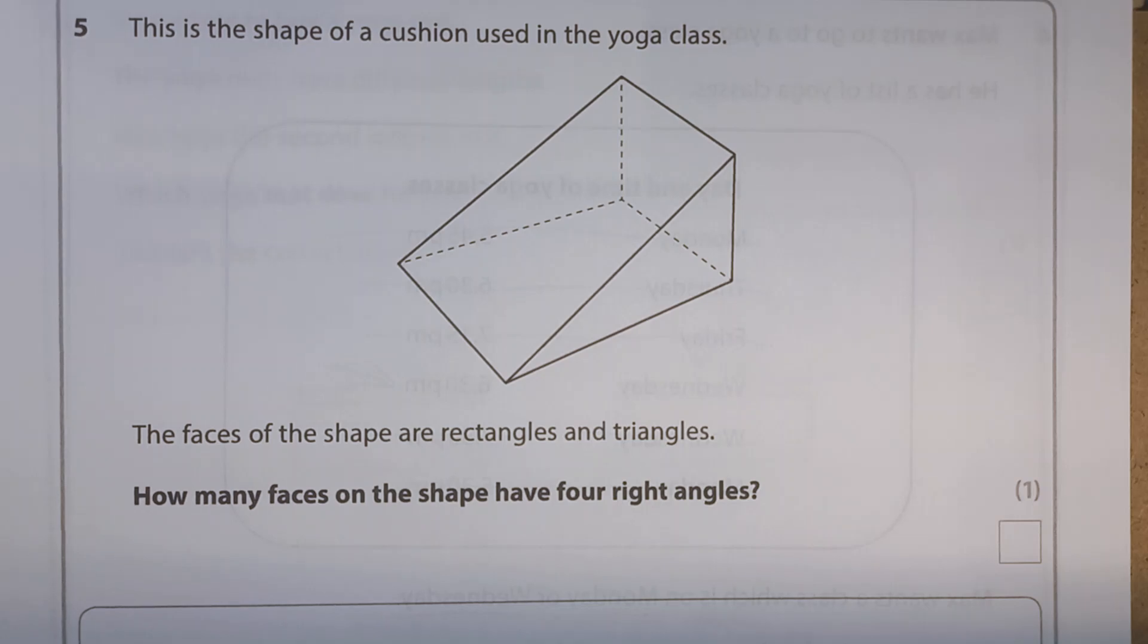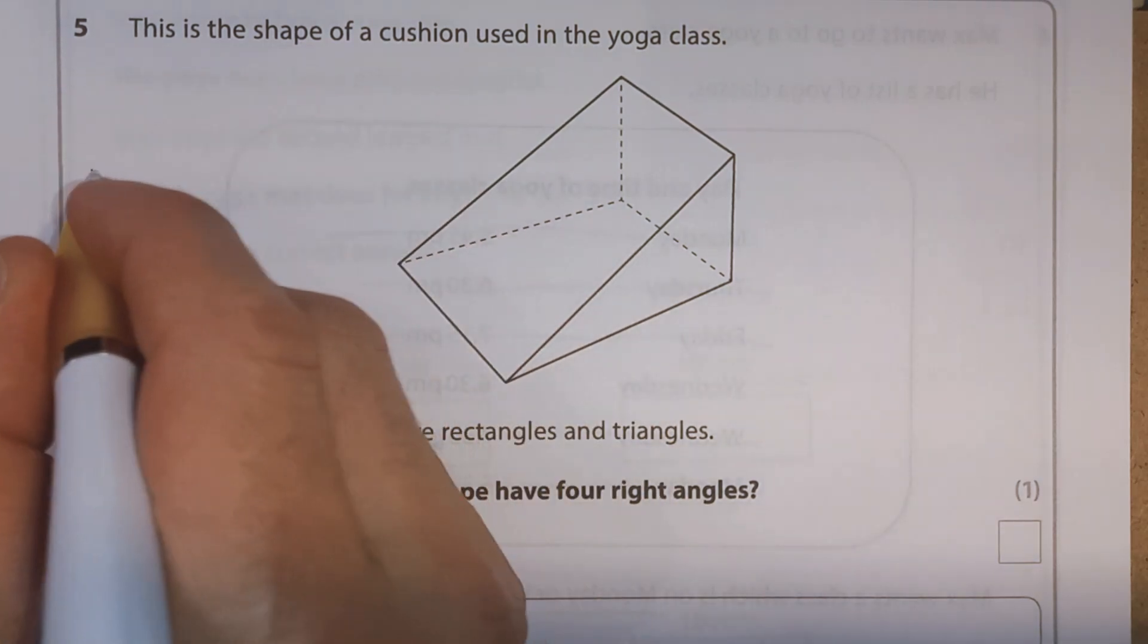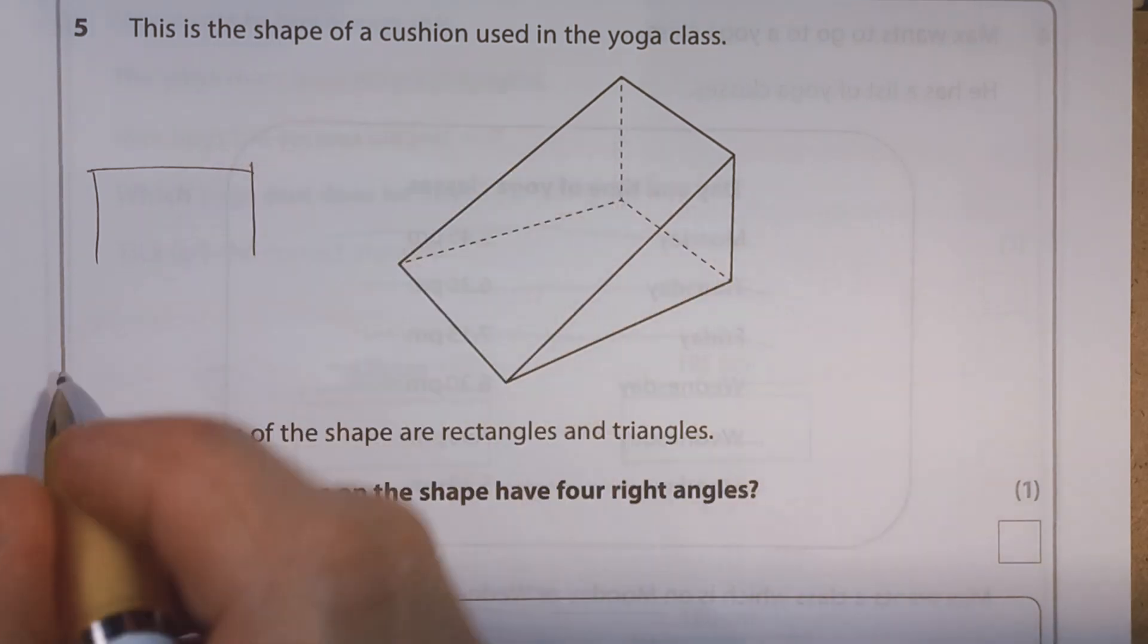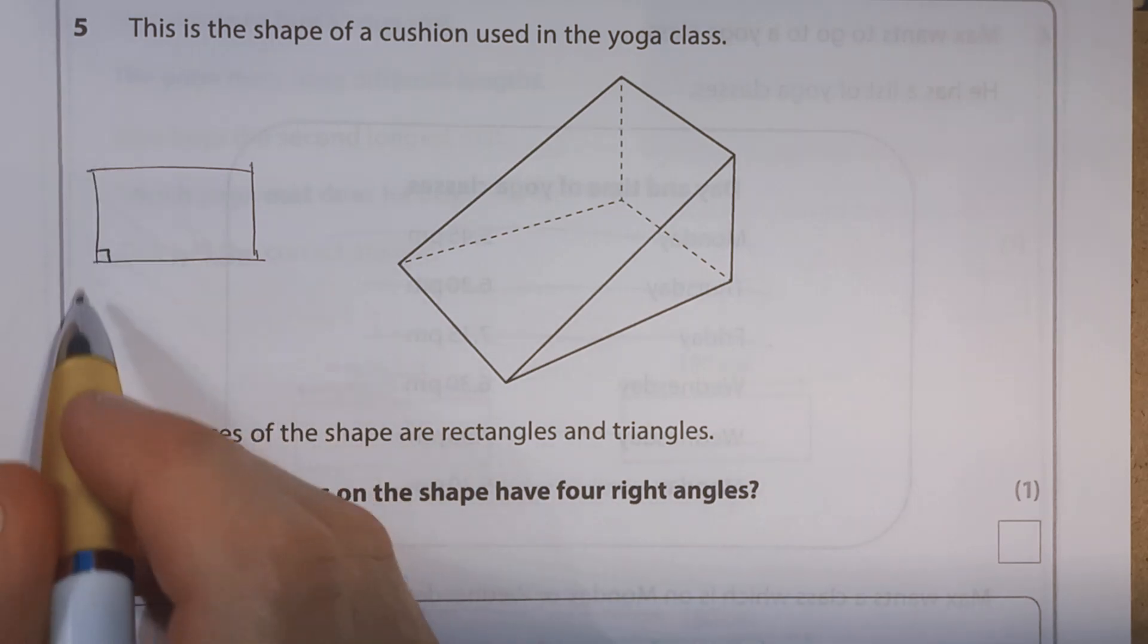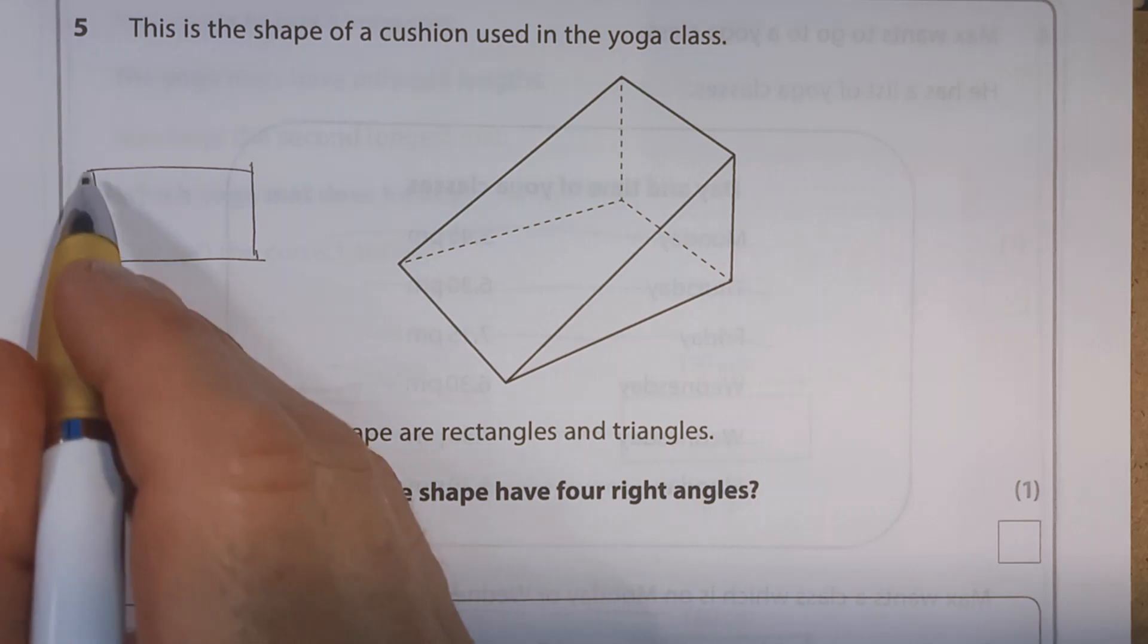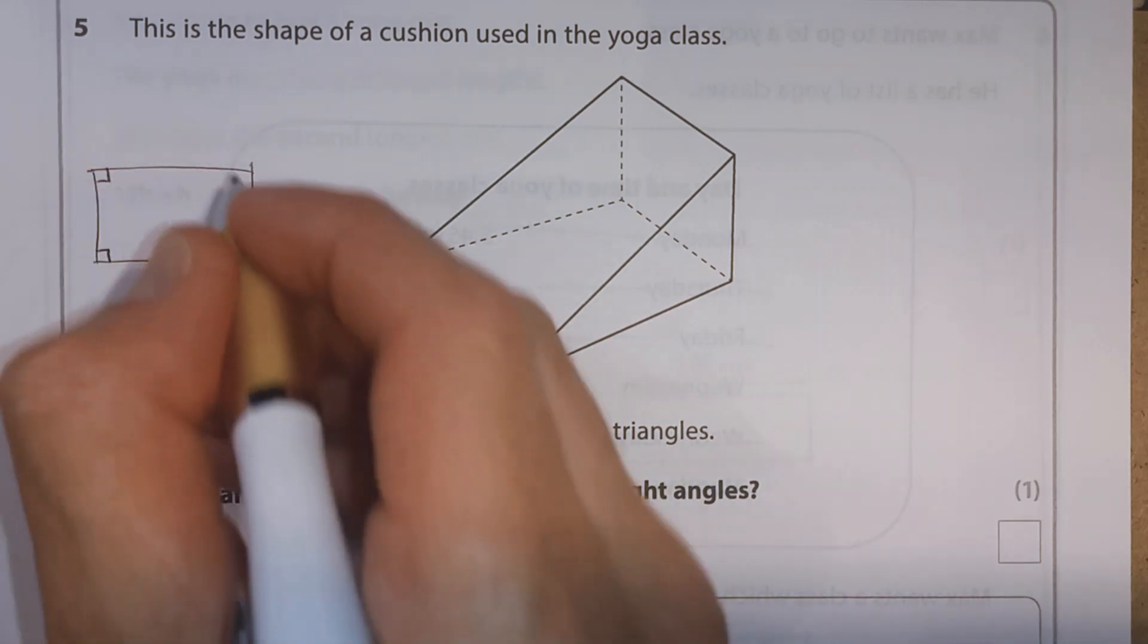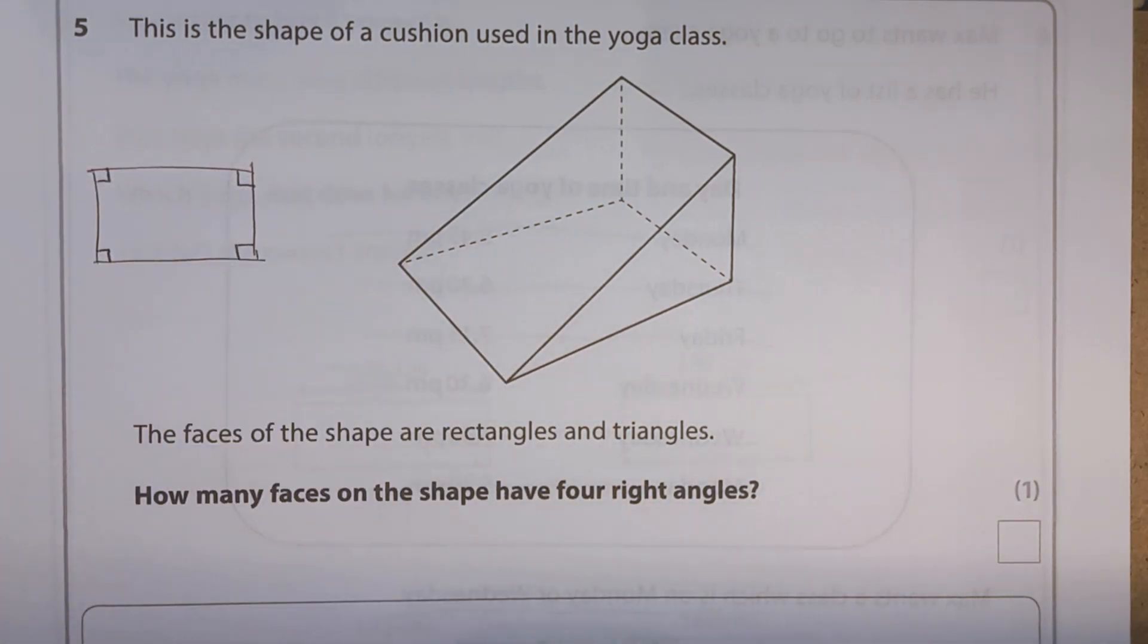Question 5. This is the shape of a cushion used in the yoga class. The faces of the shape are rectangles and triangles. How many faces on the shape have four right angles? Alright, so for a right angle, I'm going to draw a rectangle here, just as a quick sketch. And a right angle is a corner like that. We often use a square. So it's where the lines are perpendicular to each other, so they're meeting straight on there. So like you'd expect in the corner of a room. So we're looking for a shape that's got four right angles like that.